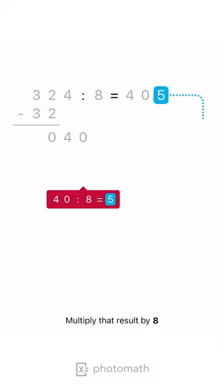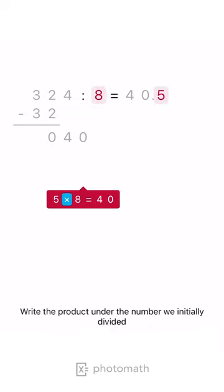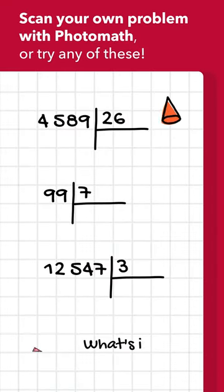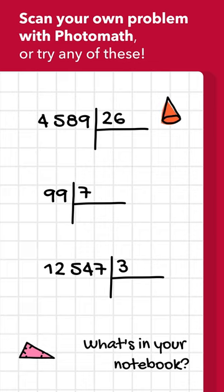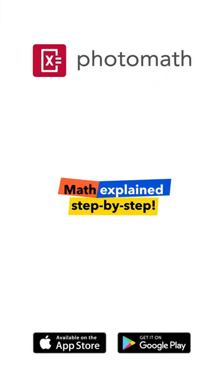Multiply that result by 8. Write the product under the number we initially divided. Subtract the numbers. The result is 40.5.